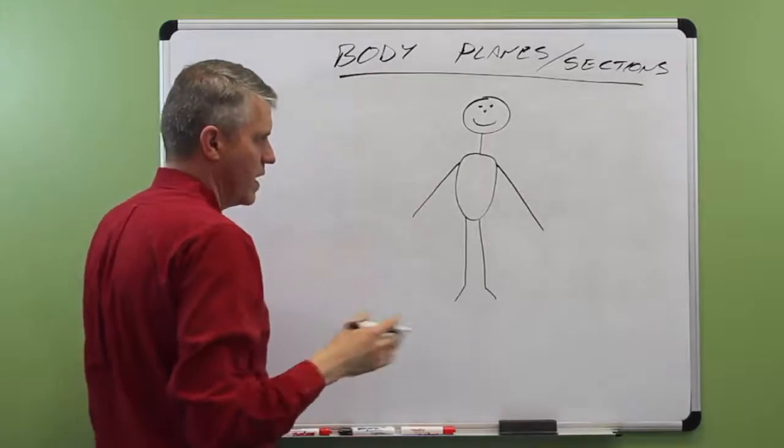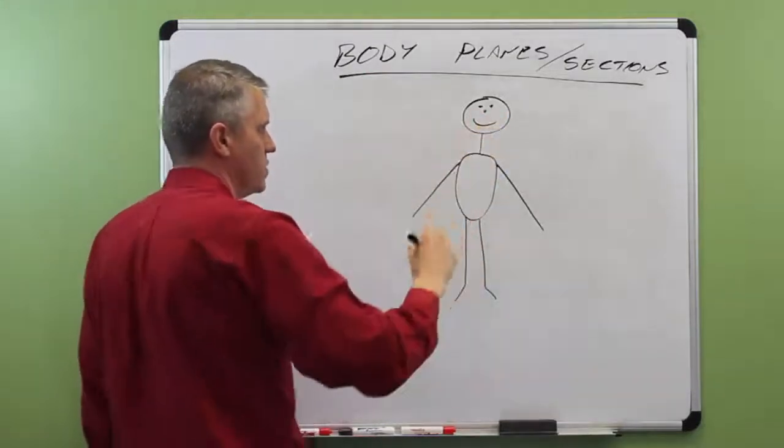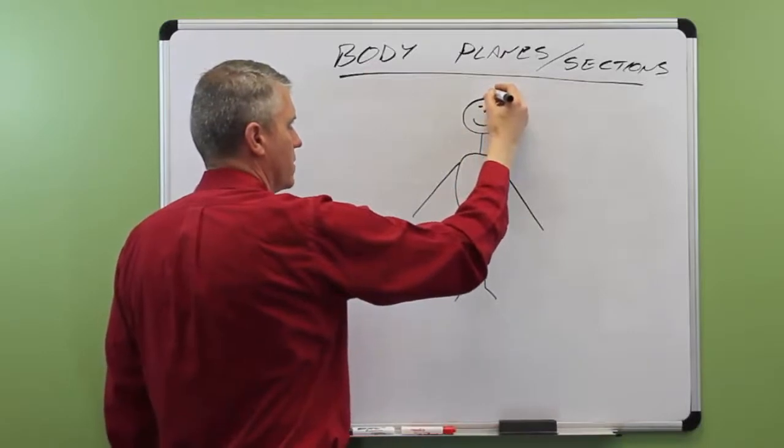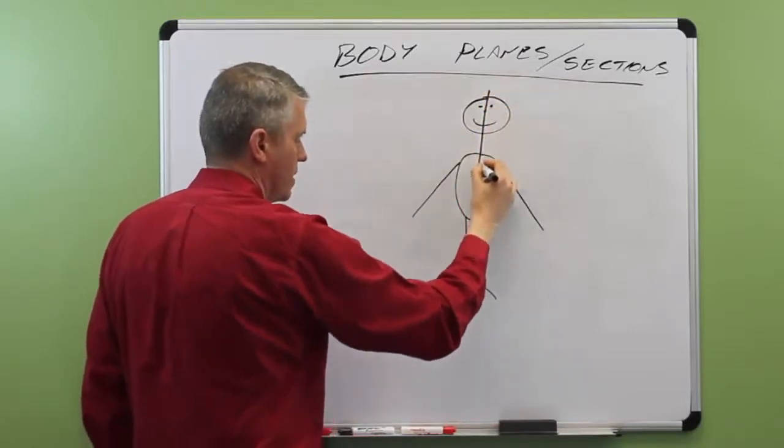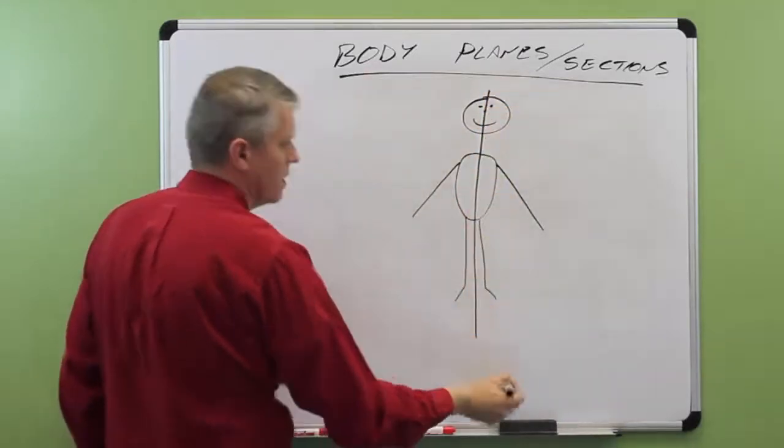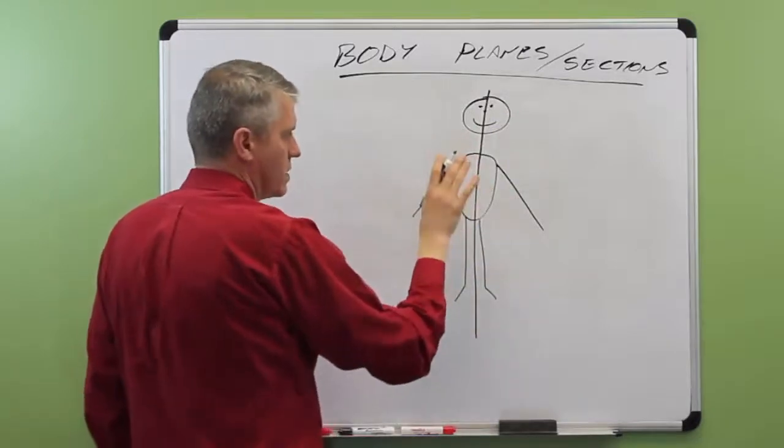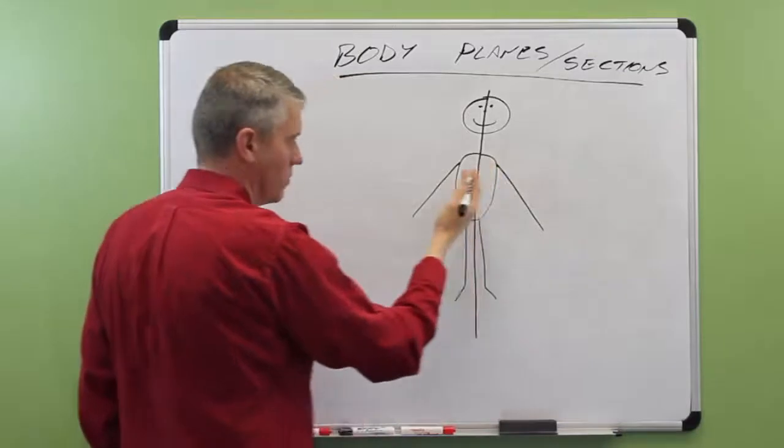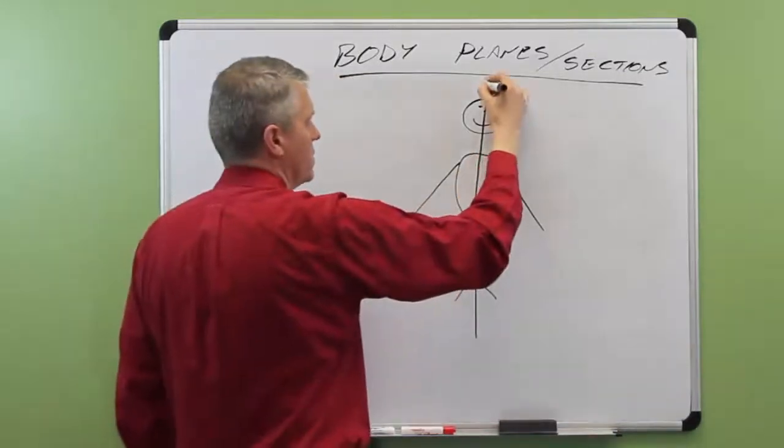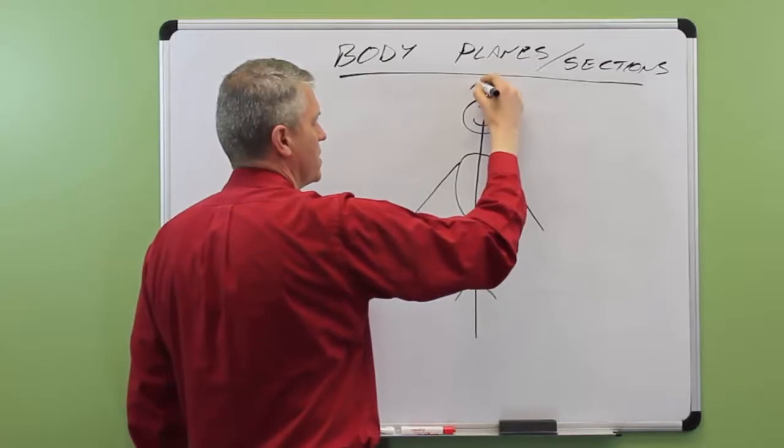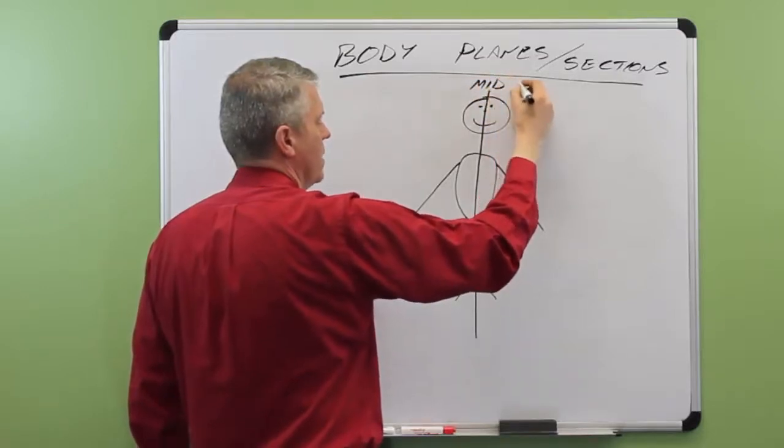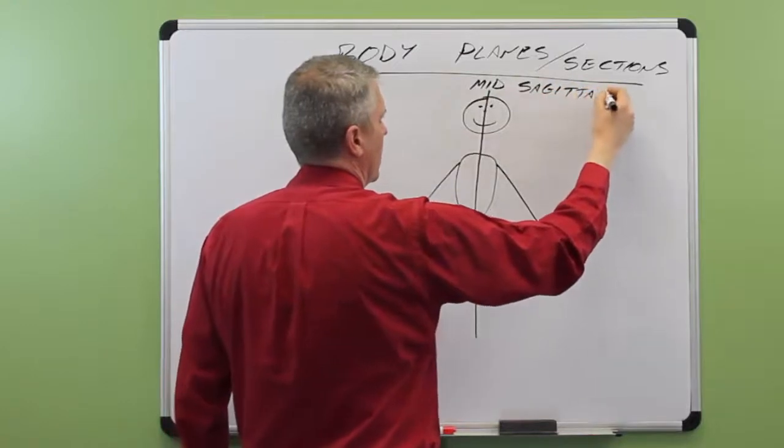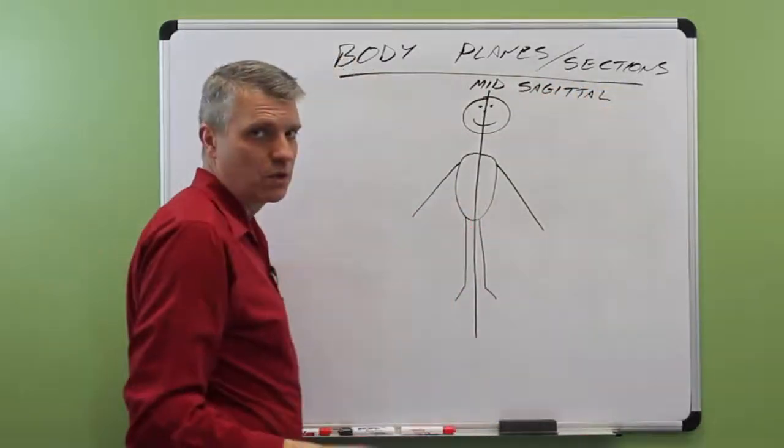For the first body plane or body section, imagine as this person standing here facing him, we did a section or a slice straight down through. That creates, notice it creates a left half of the body and a right half of the body. This is what's known as a sagittal section. In fact, specifically because it's in the middle, it's a mid-sagittal section or mid-sagittal plane.